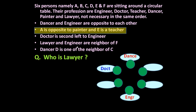Next: lawyer and engineer are neighbors of F. So engineer and lawyer are neighbors of F, meaning F can occupy this position or this position. But F cannot be here because the neighbors of F must be engineer and lawyer. If F occupies this other position, doctor and engineer would be neighbors of F. So certainly F will occupy this position, and his neighbors are engineer and lawyer. This statement is taken care of.